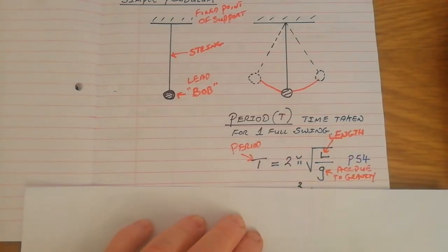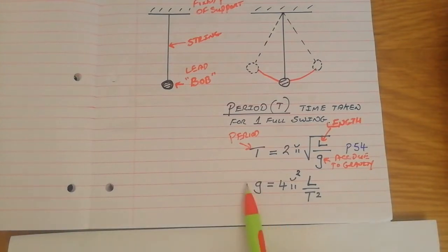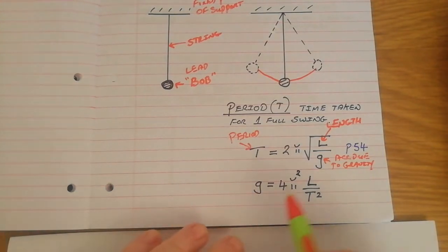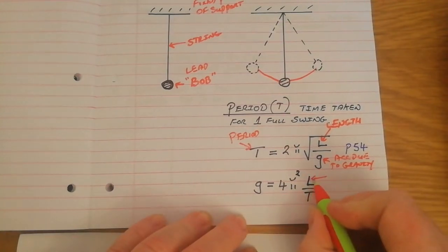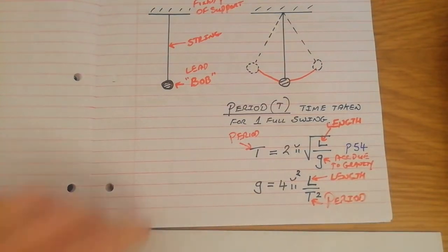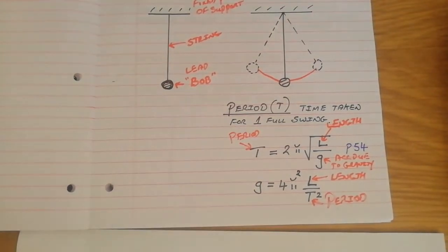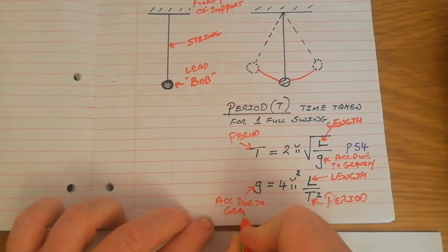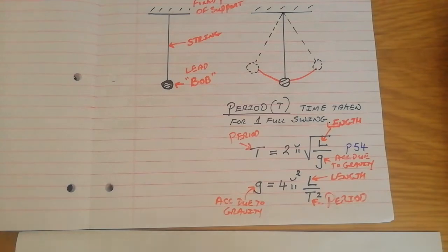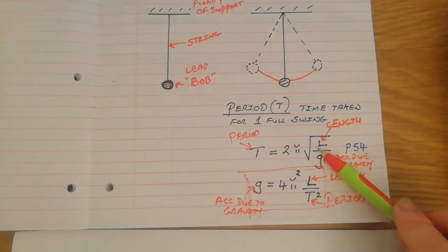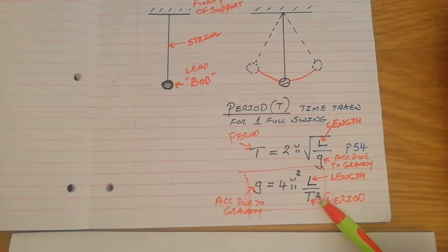If you rearrange that formula, you end up with a much more useful version for this experiment: g equals 4π² multiplied by L over T². Here, L is the length of the simple pendulum, T is the period, and 4π² is a constant equal to around 39.2. The purpose of this experiment is to measure g. I strongly suggest you pause and learn this version of the formula, because while the first version is in the maths tables, this rearranged version is not.